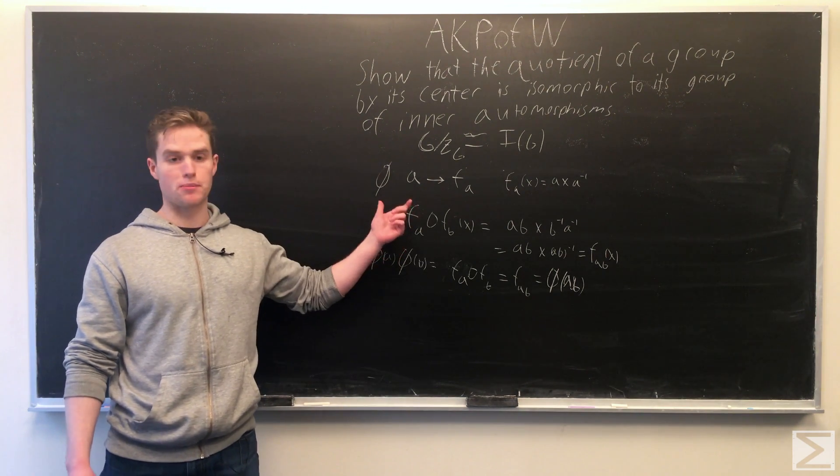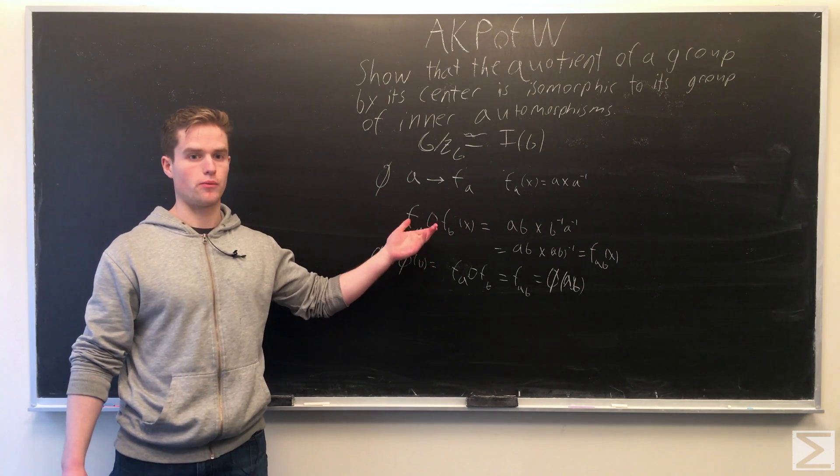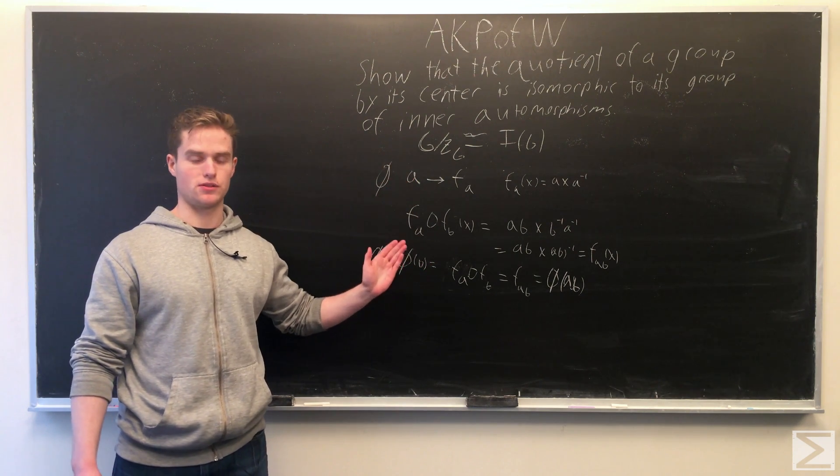Our mapping is also onto, because we get to any inner automorphism by going through all elements of G.